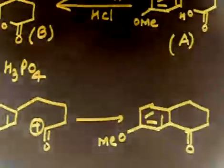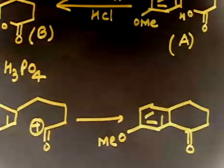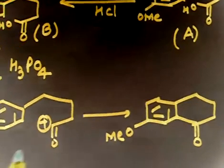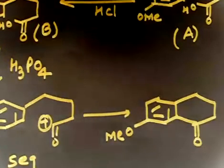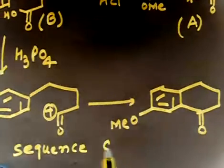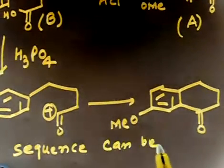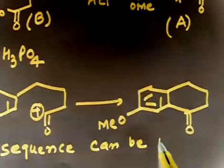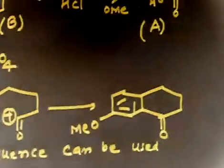So the final reaction is basically a formation of a ring. If you follow these steps, you can basically increase the ring size. First you have to use AlCl3, then Zn(Hg)/HCl, and then H3PO4. So this sequence of reactions can be used to increase the ring size — it can be used for ring formation.